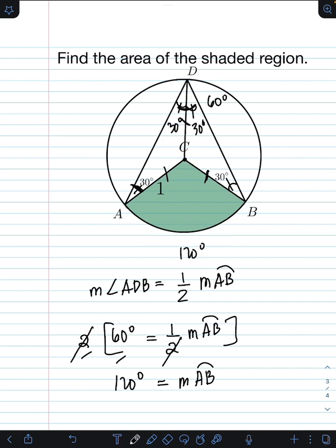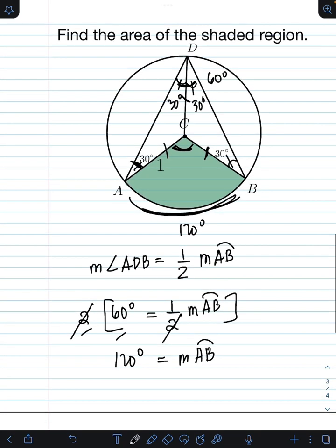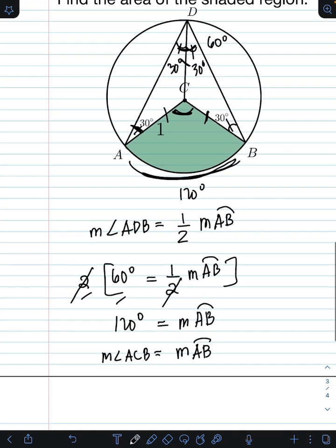And considering this time the central angle ACB, by central angle theorem, its value is equal to its intercepted arc AB. So therefore, measurement of angle ACB is equal to its intercepted arc AB, which is 120 degrees.